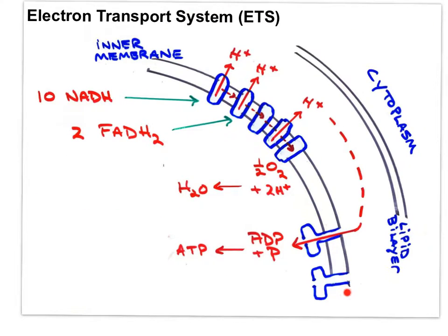Here is the electron transport chain with numerous carriers embedded in the inner membrane. The first carrier oxidizes the ten available NADH molecules — two from glycolysis, two from the link reaction, and six from the Krebs cycle. As electrons move energetically downhill toward oxygen as the final electron acceptor, energy is released, serving to pump hydrogens into the intermembrane space. FADH2 is oxidized by the second carrier in the chain, resulting in fewer hydrogen ions pumped. The hydrogen ions accumulate in the intermembrane space, creating an electrochemical gradient.